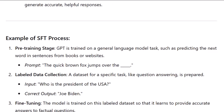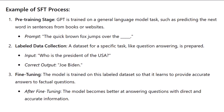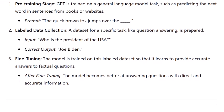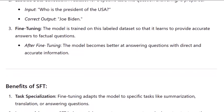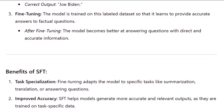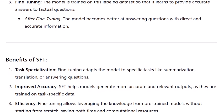An end-to-end example of the SFT process: first, the pre-training stage — GPT is trained on a general language model task, such as predicting the next word in sentences from books or websites. Prompt: 'The quick brown fox jumps over the...' Second, labeled data collection — a dataset for a specific task like question answering is prepared. Input: 'Who is the president of the USA?' Correct output: 'Joe Biden.' Third, fine-tuning — the model is trained on this labeled dataset so it learns to provide accurate answers to factual questions, becoming better at answering questions with direct and accurate information.